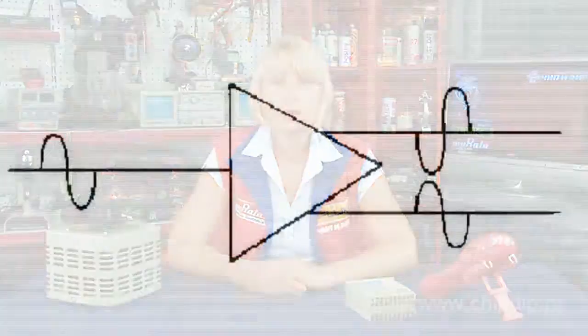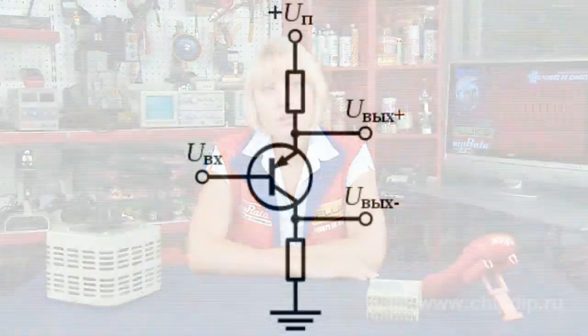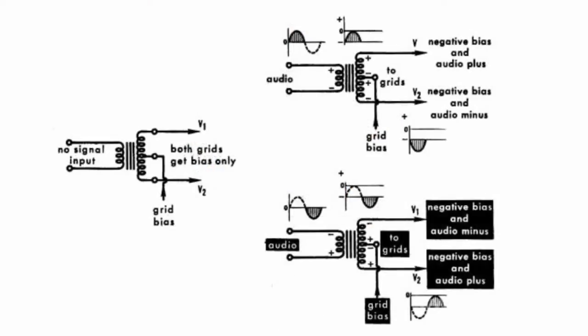A phase splitter is a device that separates a signal into multiple phases. It is used for processing of analog and digital signals, as well as in power electronics. The circuits of analog phase splitters, inverting a signal, can be constructed on the basis of a transistor amplifier, a transformer with two secondary windings, a bridge circuit, or inverting and non-inverting amplifiers connected in parallel.